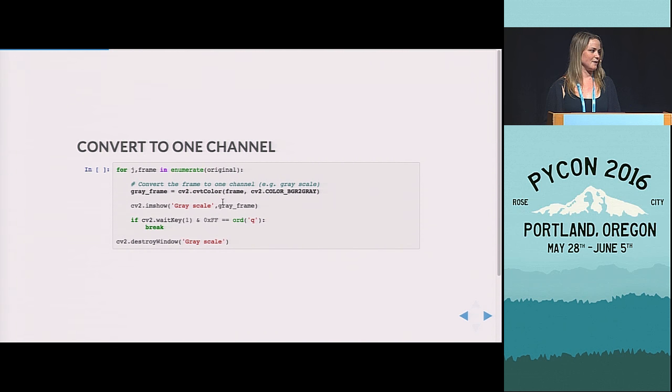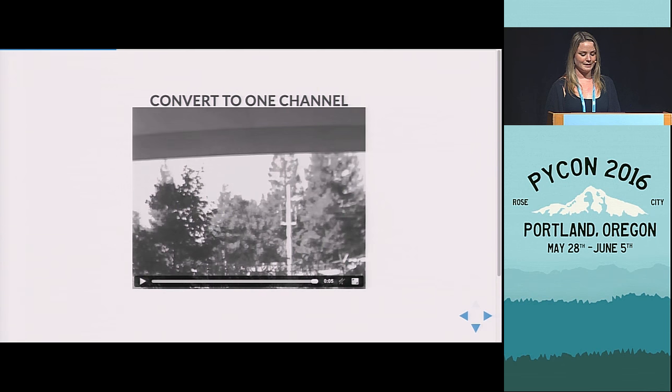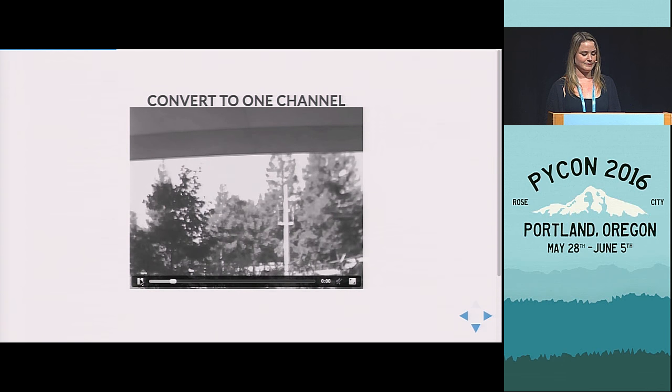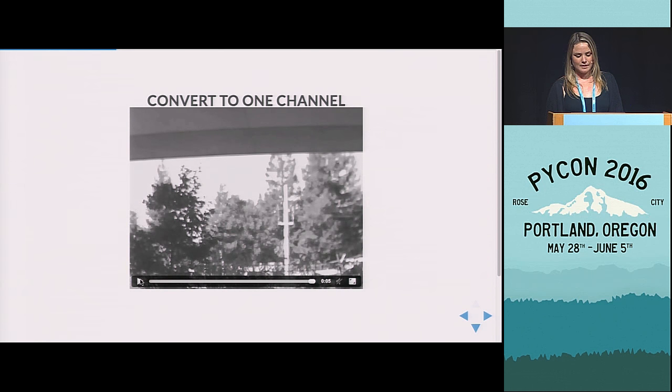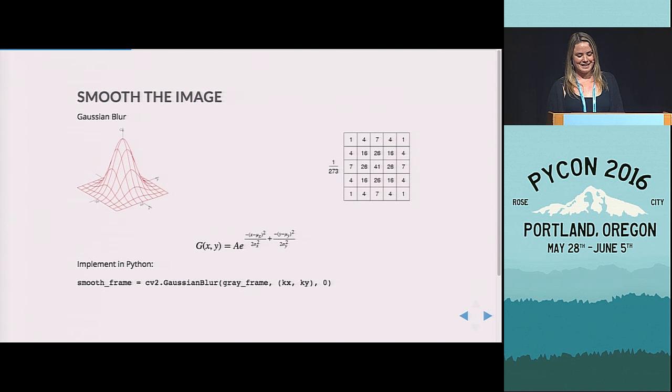So we're actually going to convert the image to one channel or grayscale. And we're going to do that using the convert color function here. And so then we're just going to insert this now in that for loop that I showed you before. And now we will output the gray video. Same video, just gray.